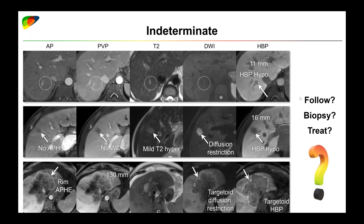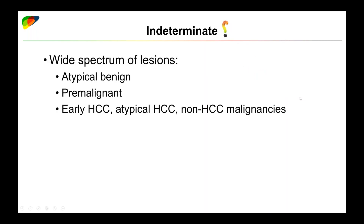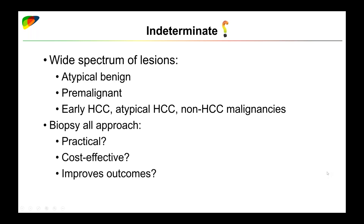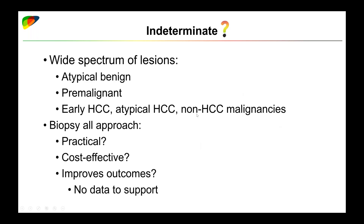Who decides how we treat these lesions? These indeterminate categories include a wide spectrum — benign, pre-malignant, and malignant entities. We don't know if a biopsy-everything approach is practical, cost-effective, or improves outcomes, and sometimes it may not even be possible because subcentimeter lesions may not be targetable. Without a diagnostic schema to approach these observations, the decision of what to do with them will be very variable depending on who read the case and institutional practices.